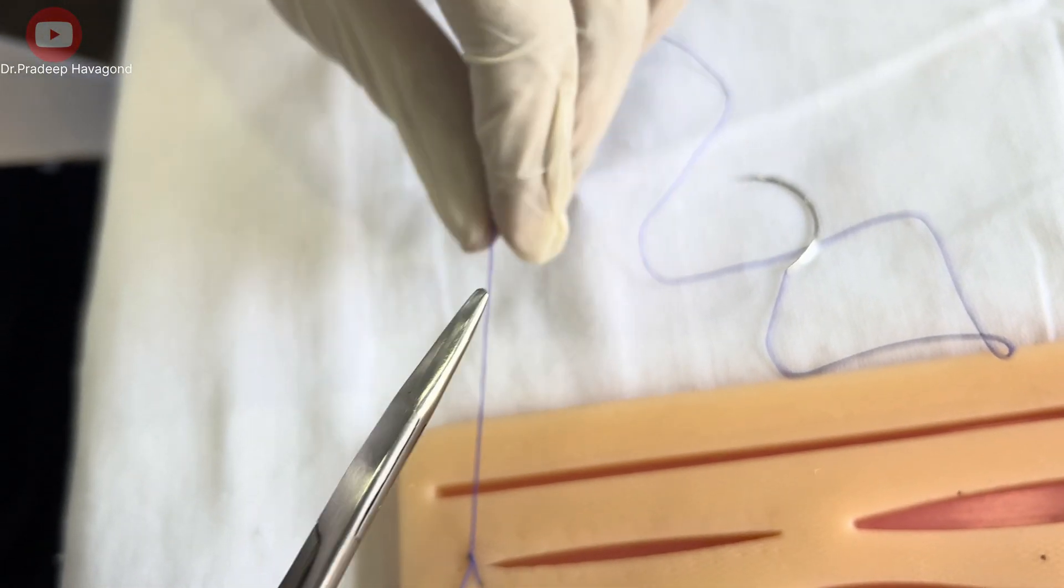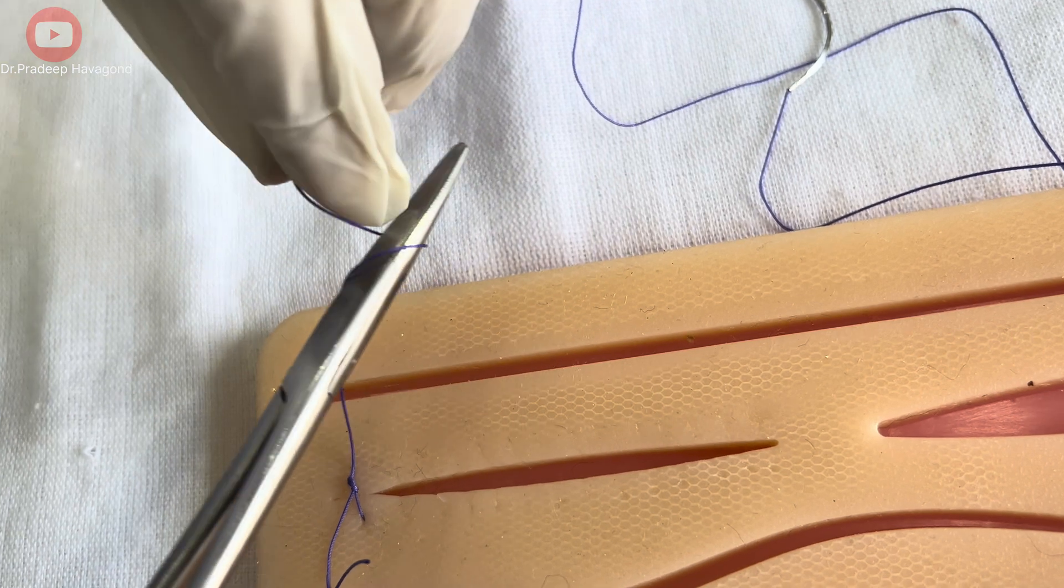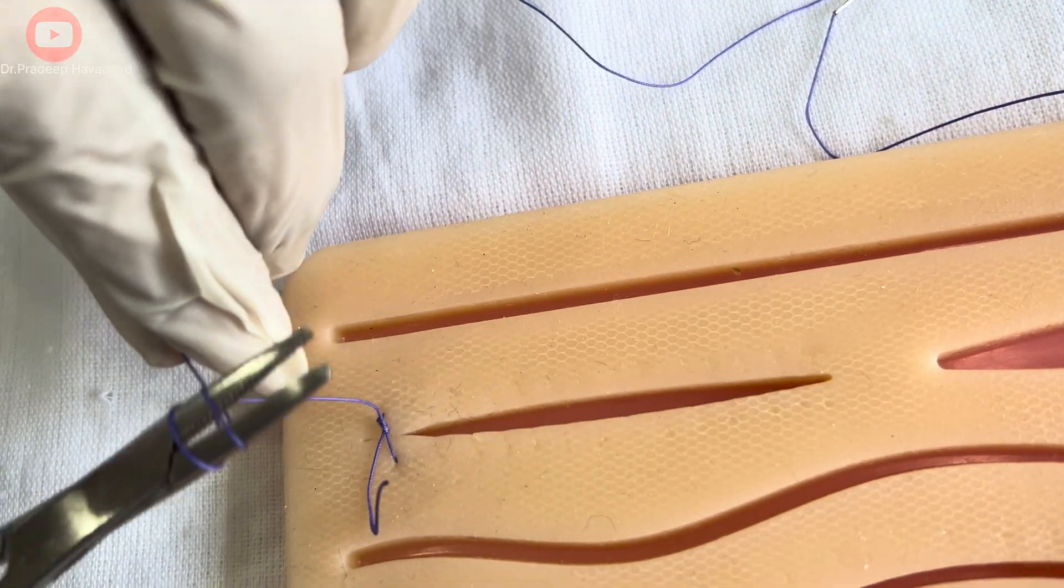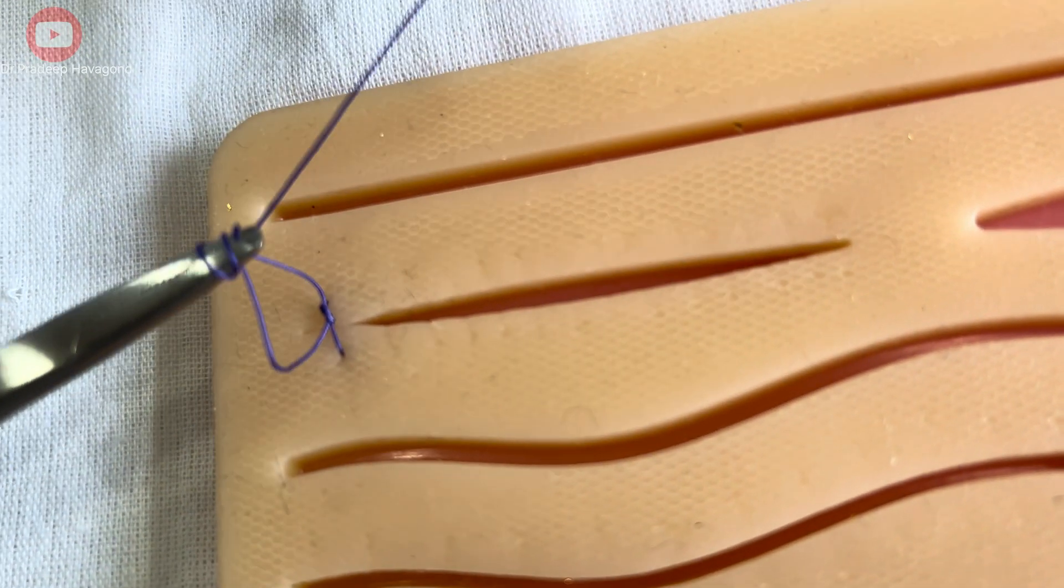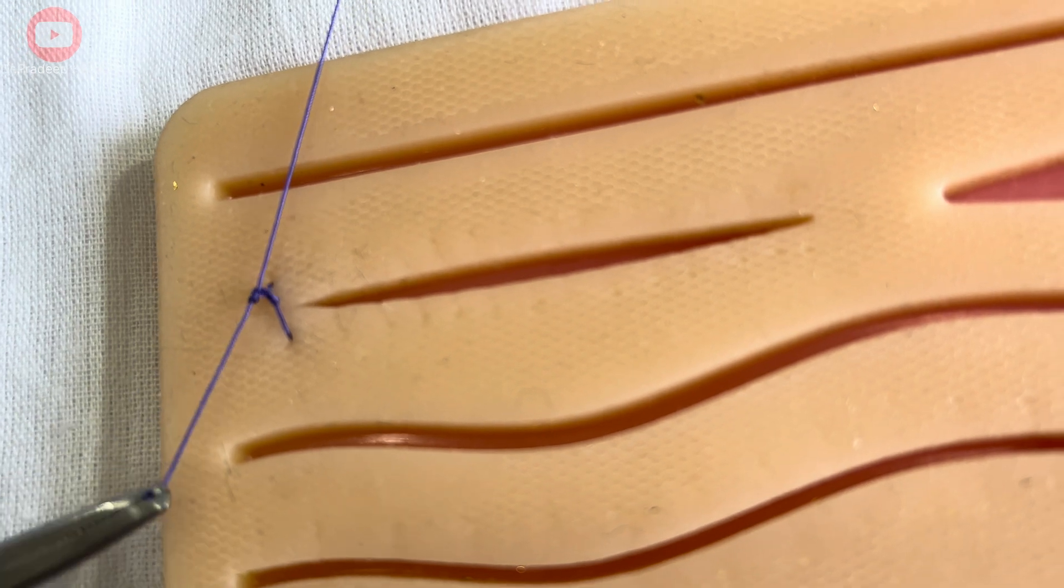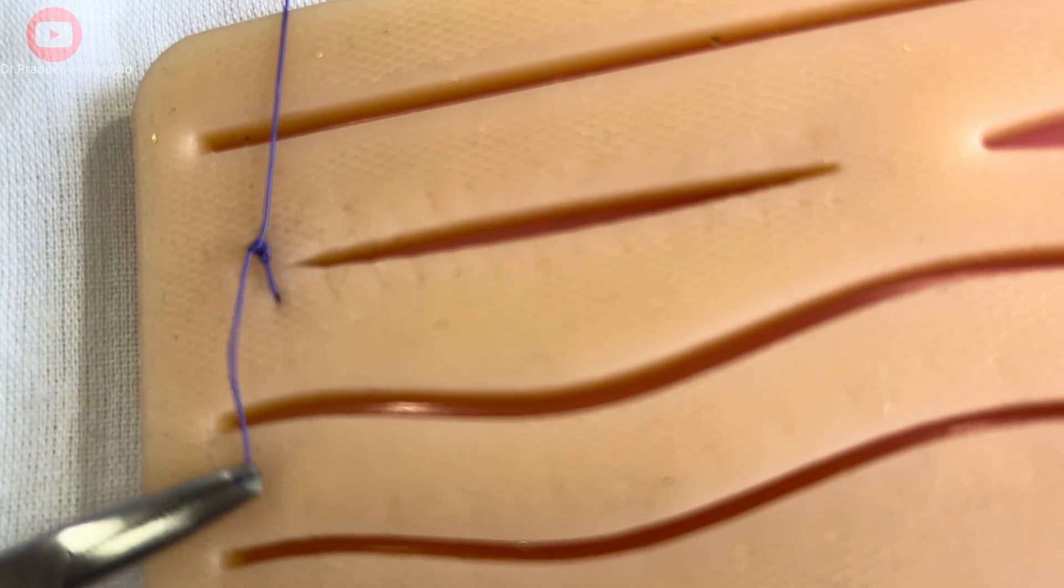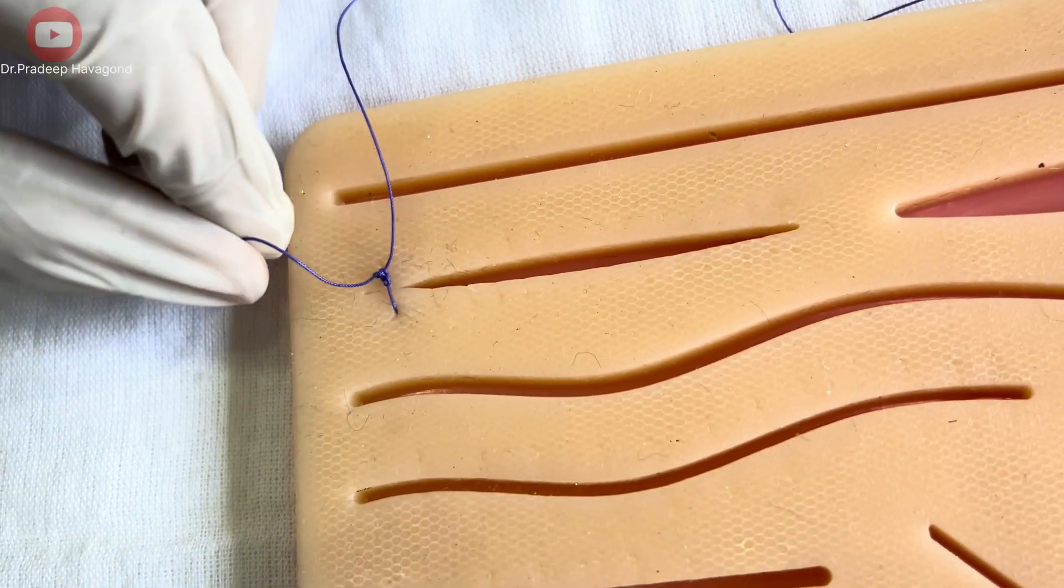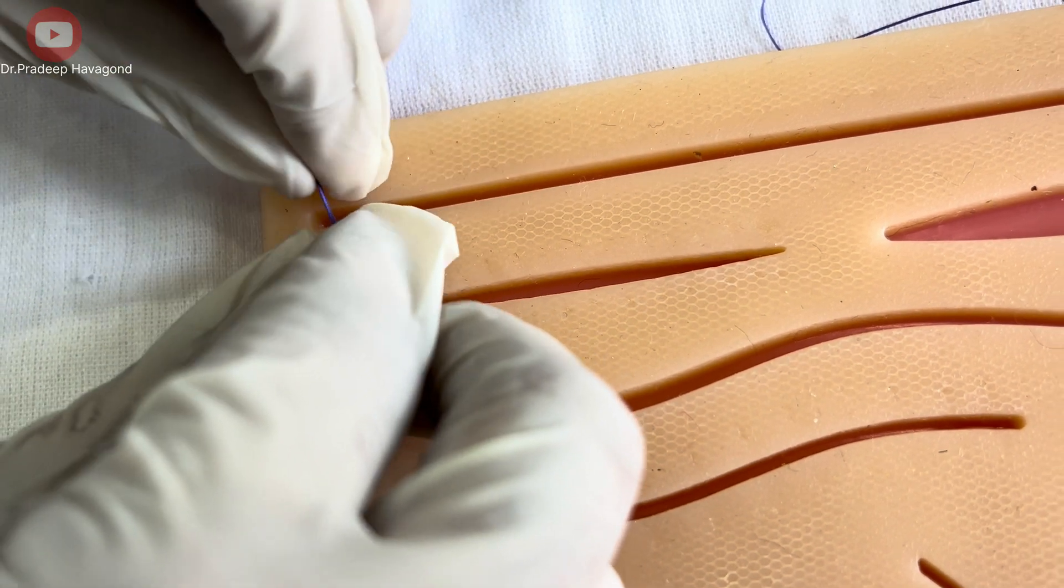Remember, for a square knot, you want the first throw to be in one direction and the second in the opposite direction to prevent the knot from slipping. Make sure the knot forms neatly and trim any excess suture material.